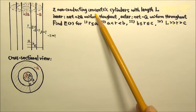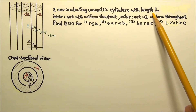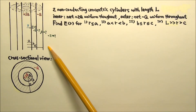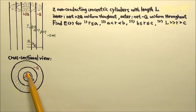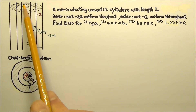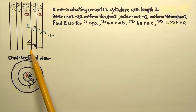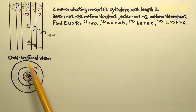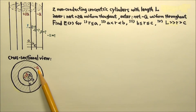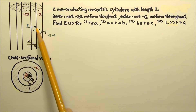Here we have two non-conducting concentric cylinders with length L. This is the side view of the midsection of the cylinders, and this is the cross-sectional view. The inner cylinder has a radius A and a net charge of positive 2q uniformly distributed throughout the entire volume. The outer one is a hollow cylinder with inner radius B and outer radius C, with a net charge of negative 1q uniformly distributed throughout the entire volume.